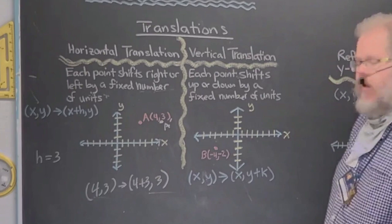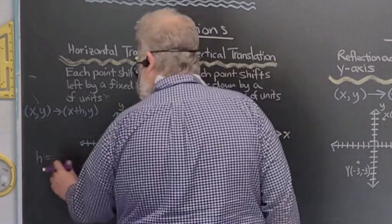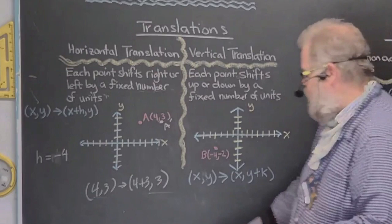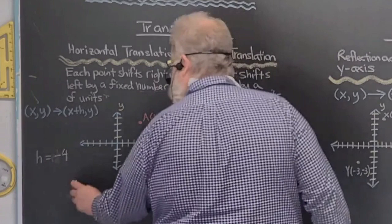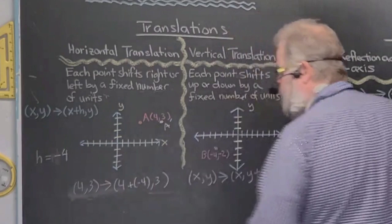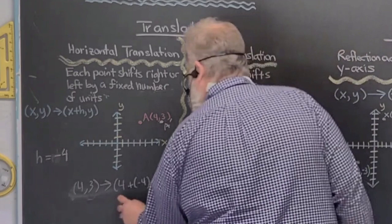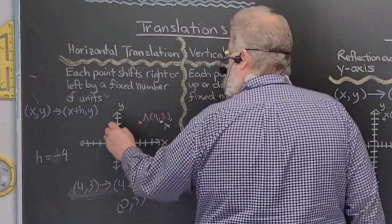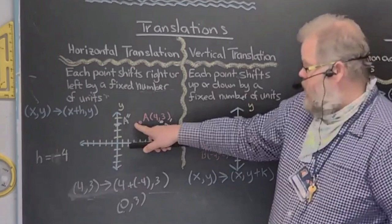Now if H is negative — let's choose H equal to negative four — the ordered pair four comma three becomes four plus negative four comma three. Four plus negative four is zero, so we get zero comma three. That's a shift four units to the left. That's how horizontal shifting works.